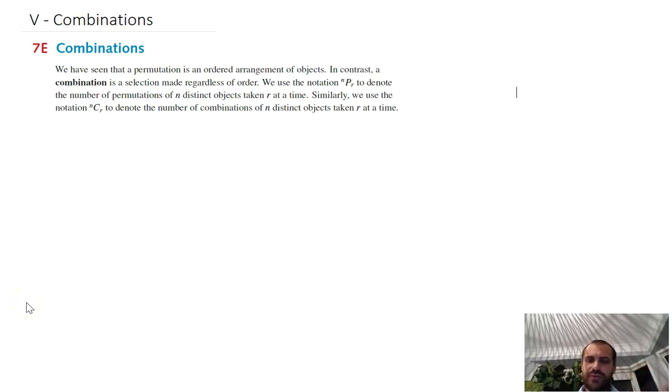Our first bit of new stuff this term: combinations. We've been doing permutations, which is an ordered arrangement of objects. One person in the front seat of the boat, the next person in the next seat, the next person in the next seat. But what if we just don't care what order they're in? We've just got 10 people and we need to put them in a four-person boat. How many groups of four people can we pick?